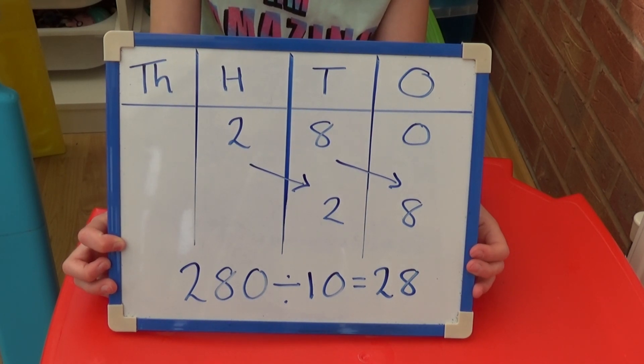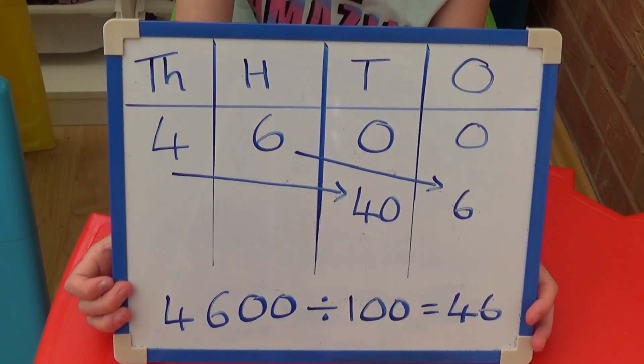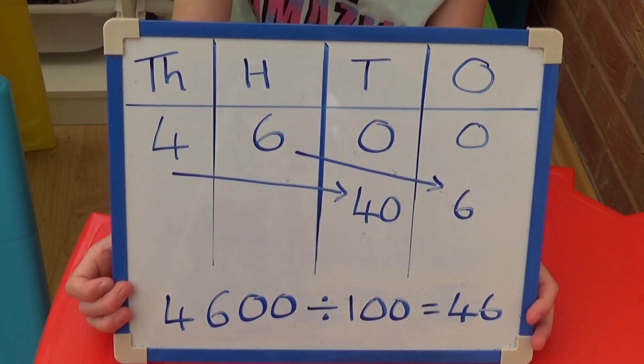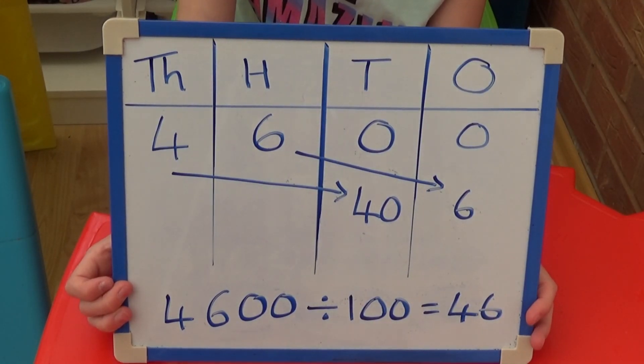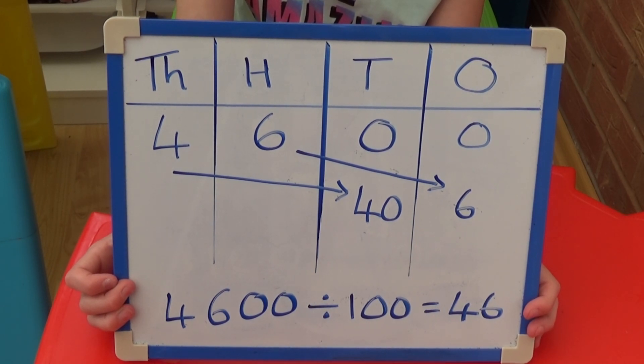So 280 divided by 10 equals 28. For 4,600 divided by 100, each digit moves two columns to the right, so 4,000 becomes four tens, 600 becomes six ones, and we no longer need the two zeros.